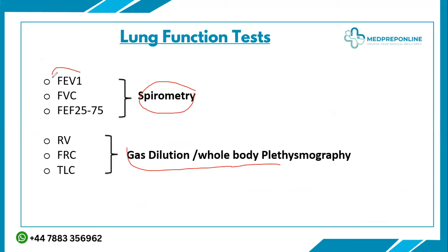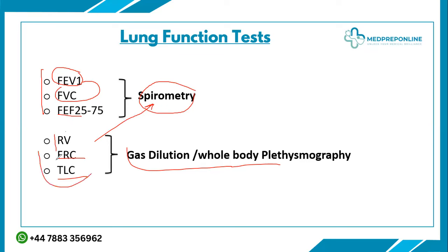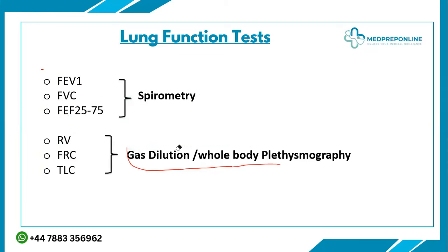Spirometry measures the forced expiratory volume at one second (FEV1), the forced vital capacity (FVC), and FEF 25-75, which is the forced expiratory flow at 25 to 75 percent. However, residual volume, functional residual capacity, and total lung capacity cannot be measured with spirometry — you have to use gas dilution and whole body plethysmography for those.